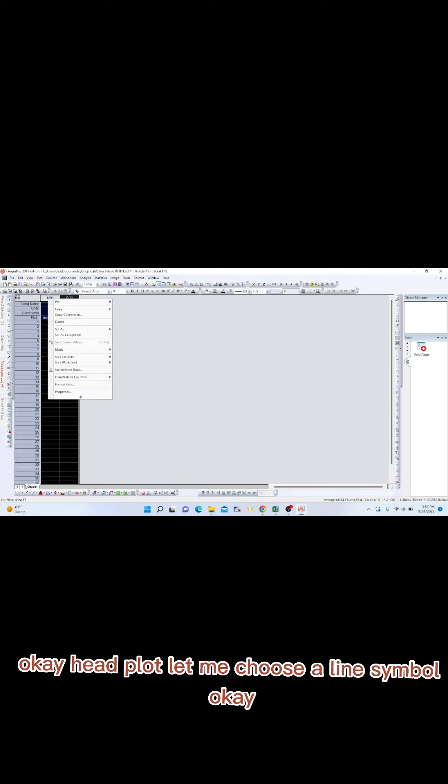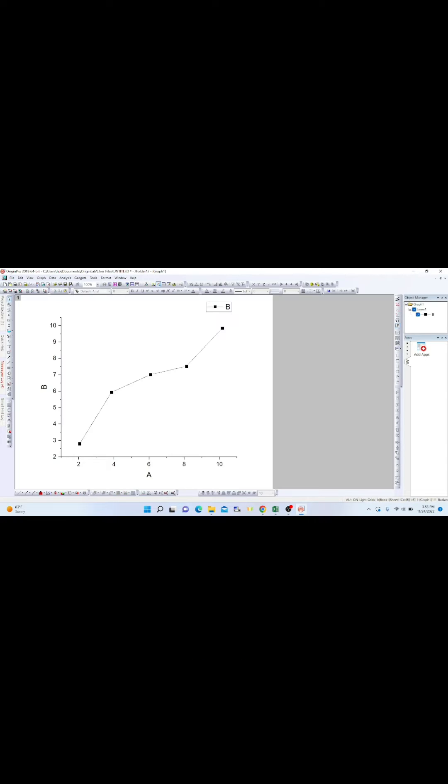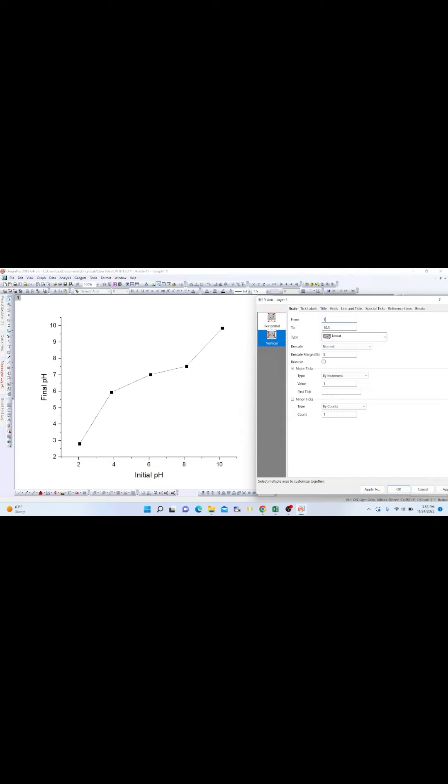Now what we will do is open up the Origin software and then plot this. We'll copy these values and paste here. These values are now pasted. Select these, then plot, then we choose line and symbol. Now we'll name this axis and make some modifications. Let's start this from 2.